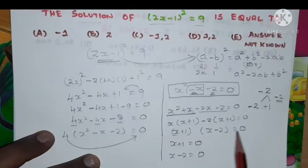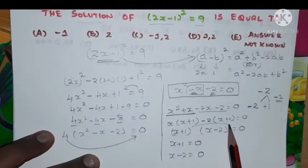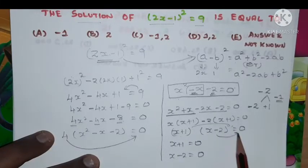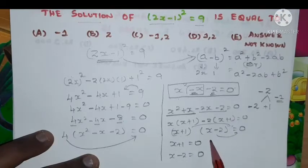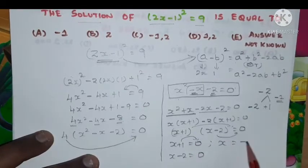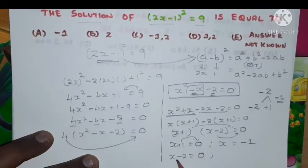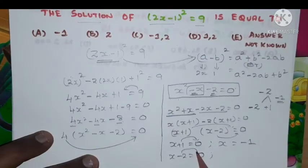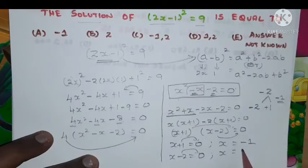I am right, (x+1) into (x-2) = 0. Hence x+1 = 0 and x-2 = 0. Hence x+1 goes to the other side will become minus 1. At the same time x-2 where minus 2 goes to the other side will become plus 2.